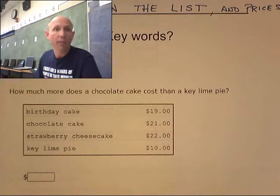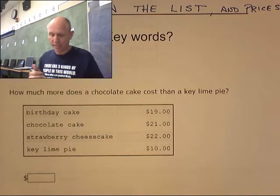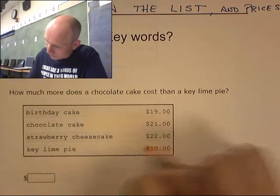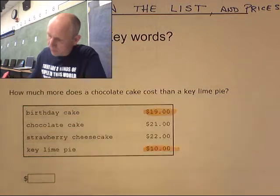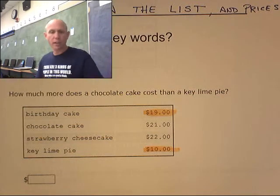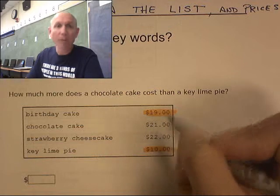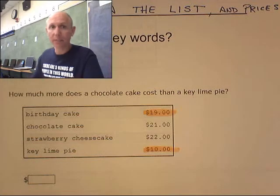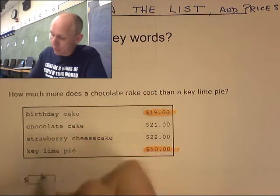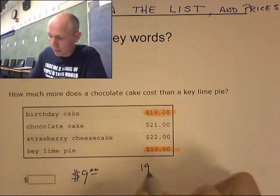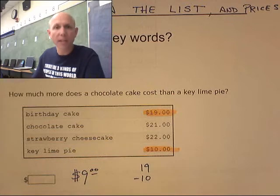How much more does a chocolate cake cost than a key lime pie? I'm looking at a key lime pie and a chocolate cake. The pie is ten dollars, the cake is nineteen. How much more is the cake? The cake is nine dollars more. The math was nineteen minus ten equals nine.